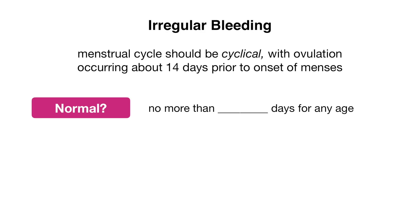Our third definition is irregular bleeding. Ideally, a menstrual cycle should be cyclical with ovulation occurring about 14 days prior to the onset of menses, as mentioned earlier, in a 28-day average cycle. Most menstrual cycles don't occur exactly every 28 days — there's always going to be some variation. What's considered normal variation depends on age: around menarche and the premenopausal years, there can be more variation than in a woman in her 20s to early 40s. But this variation should not be more than seven to nine days for any age.